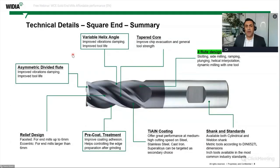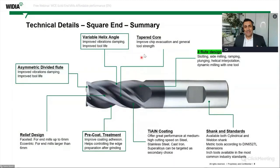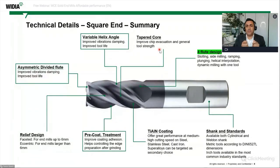Starting with the first technical detail slide on the four-flute square end version: we have asymmetric divided flutes — an important feature for improving vibration damping and improving tool life. Moving up, there is a variable helix, which again improves damping and tool life. Then a tapered core: this is important for improving chip evacuation and giving the tool better overall strength.